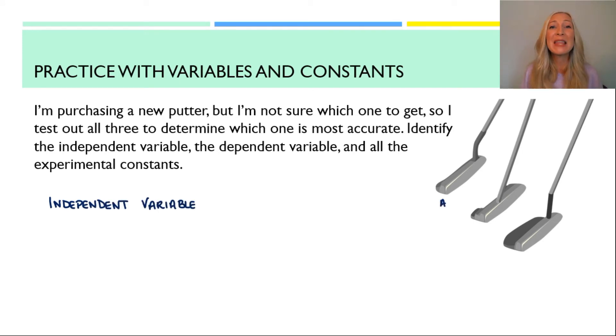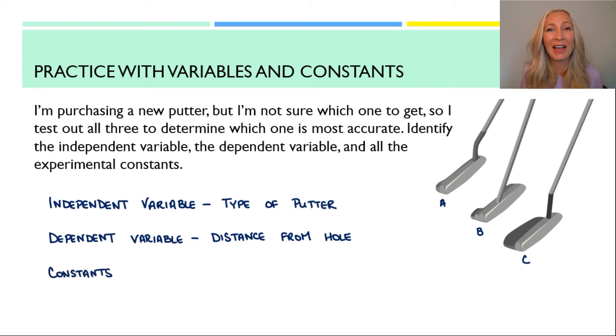Let's go through the answers here. The independent variable would be the type of putter that I used, A, B, or C. The dependent variable will be how close to the hole did my putt get or the distance to the hole. All of my constants will include the starting point. I mean, it wouldn't be fair if I used putter A very close to the hole and putter C very far away from the hole. That wouldn't be fair. The whole point of constants is to make your experiment fair. So I want to keep the starting point the same.